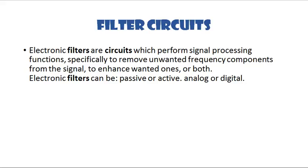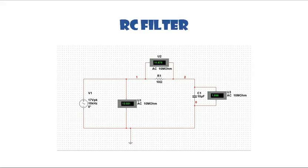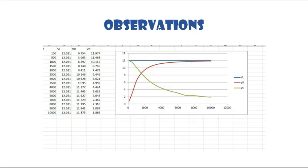This is my first circuit: the RC filter. We can see that I have placed a 17-volt peak value voltage source in series with a resistor and a capacitor. These are the observations for different frequencies — the voltage across the inductor, across the resistor, and across the capacitor.